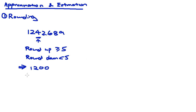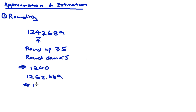What if the number was 1262.689? If asked to round off to the nearest hundred, the answer would be 1300, because the tens digit, 6, is more than 5, so we round up.